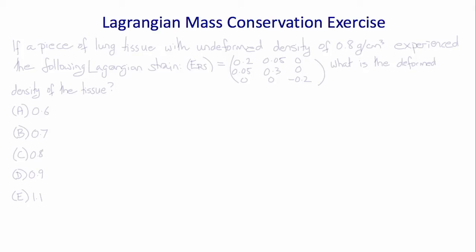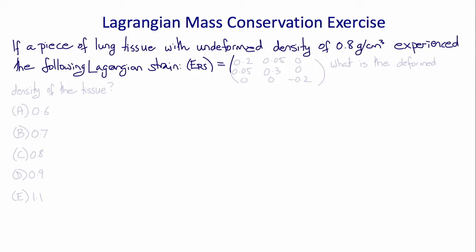Let's do an exercise making use of the Lagrangian form of mass conservation. If a piece of lung tissue has an undeformed density of 0.8 grams per centimeter cubed and experiences the following Lagrangian strain field, what is the deformed density of the tissue?